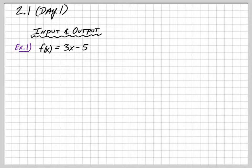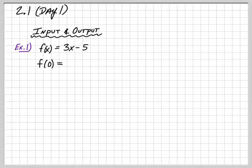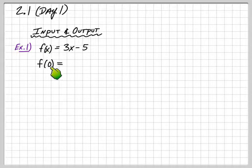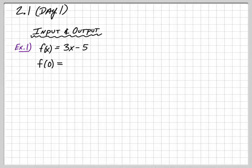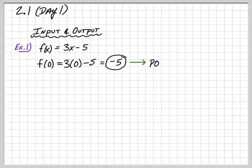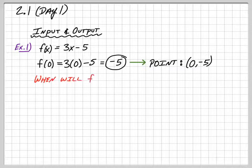The first example is f of x equals 3x minus 5. It gives you a function, and then I ask: what is f of 0? Hopefully by now you know that means where there was an x, now there's a 0. So take 0 and plug it in for x. 3 times 0 minus 5 is negative 5. So f of 0 represents the point (0, -5).